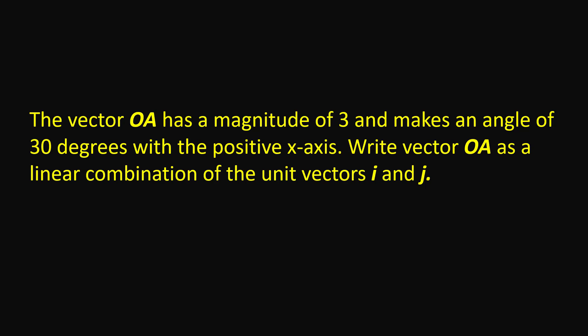The vector OA has a magnitude of 3 and makes an angle of 30 degrees with the positive x-axis. Write vector OA as a linear combination of the unit vectors I and J.